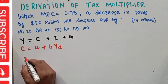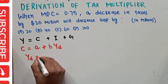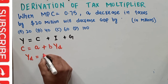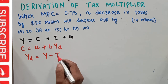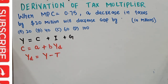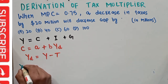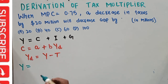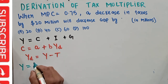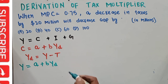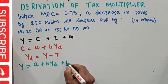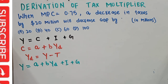Disposable income is that part of income remaining after taxes, so we subtract taxes from total income to get disposable income: Y_d = Y − T. With this, our GDP national income identity becomes: Y = a + b·Y_d + I + G, where investment I and government spending G are both autonomous.